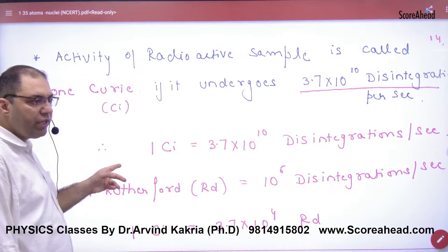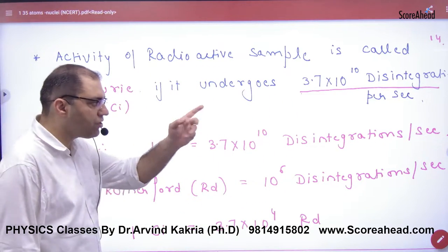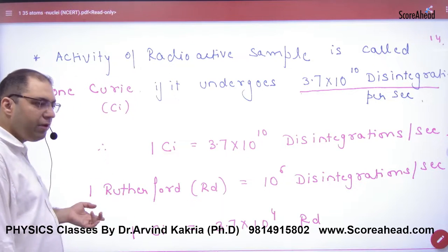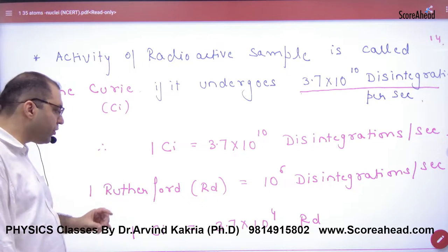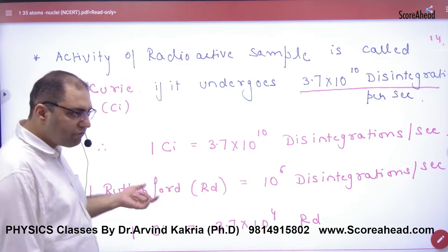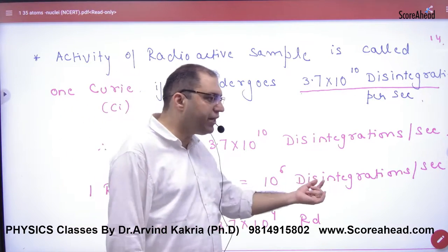Now, one curie is 3.7 x 10 to the 10 disintegrations per second. Sometimes in papers, the activity unit Rutherford is given. So Rutherford converts to disintegrations per second.